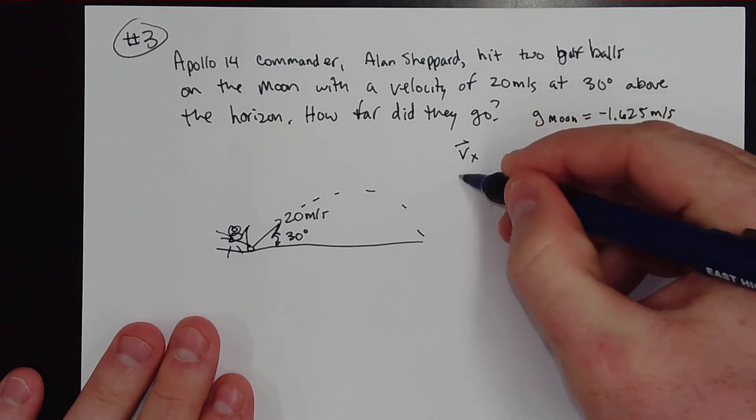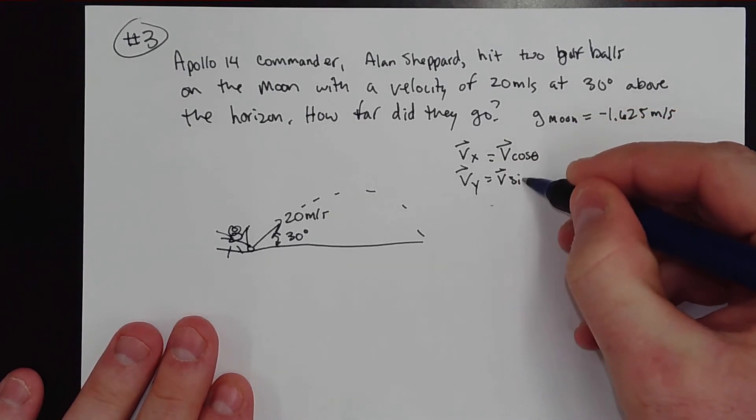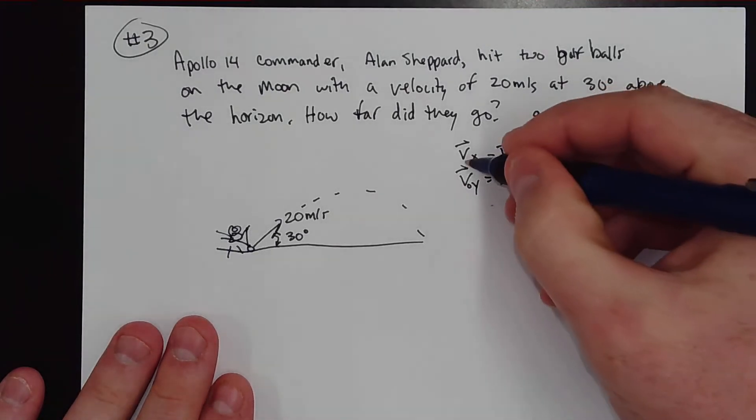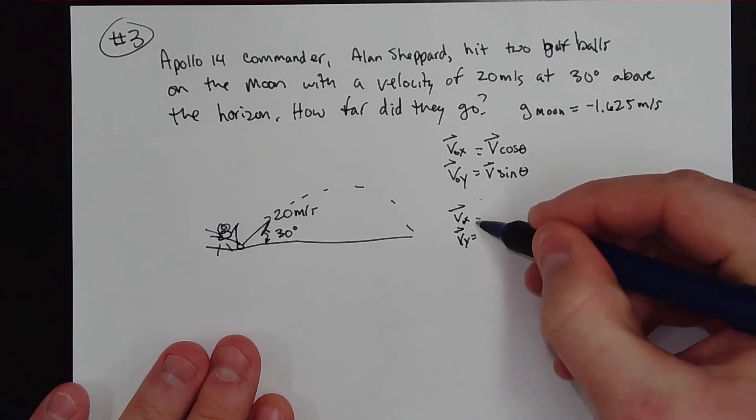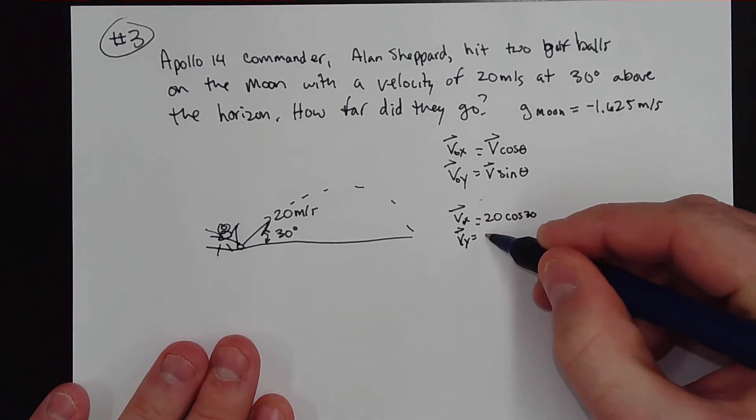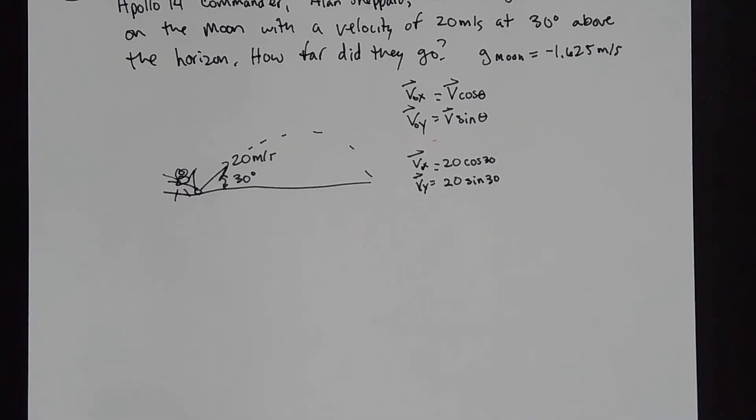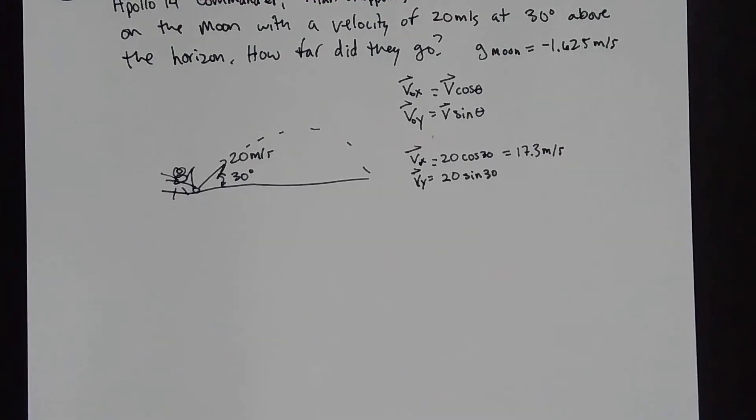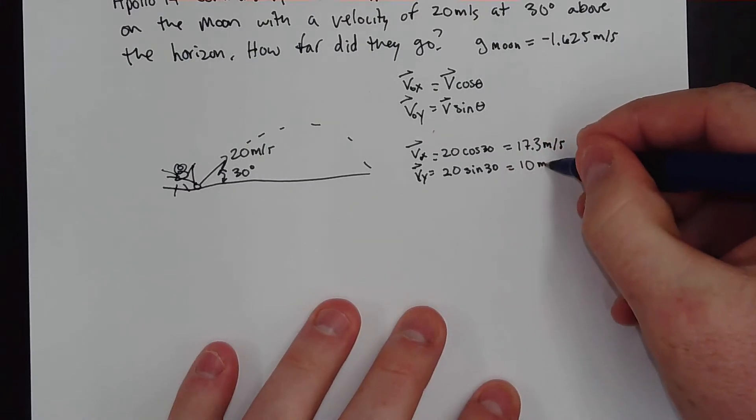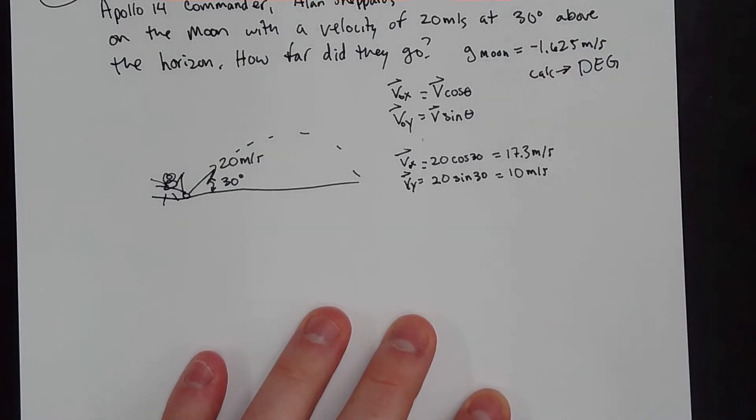So whenever you have an angle, the first thing you need to do is break it into its vector components, Vx and Vy. And remember how we do that is with V cosine theta for the x direction and V sine theta. And that will give us the initial velocity in the x and the initial velocity in the y. And so by doing that, we get 20 cosine of 30 and 20 sine of 30. So plugging that into my calculator, I get approximately 17.3 meters per second in the x and 20 sine of 30 gives me 10 meters per second. Now remember, your calculator needs to be in degrees, not radians. That's a very common mistake.